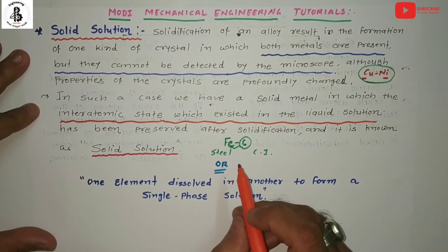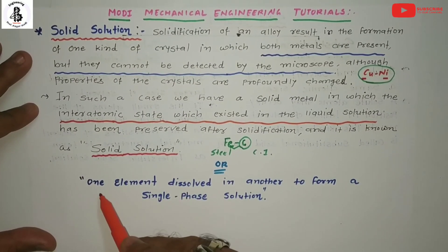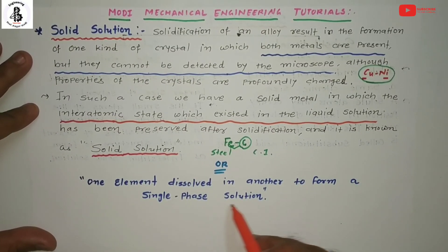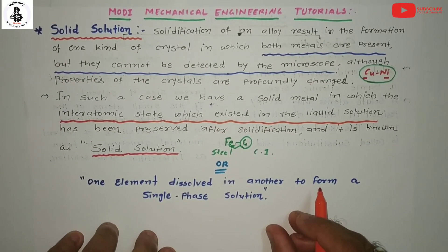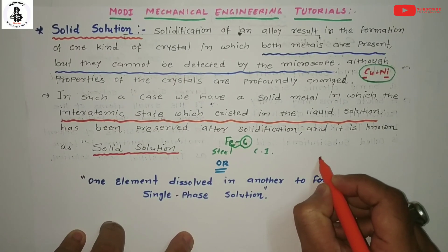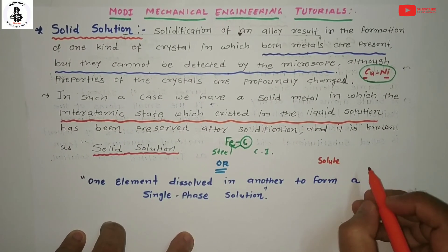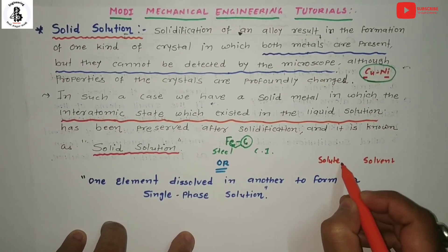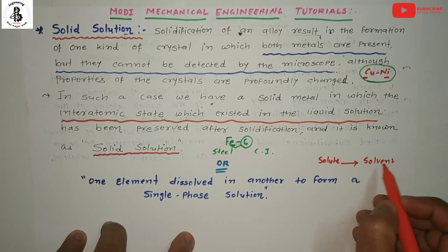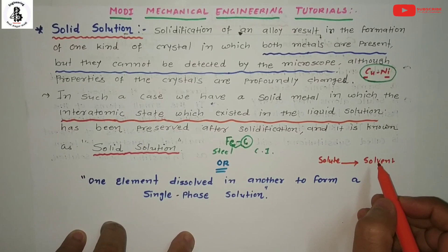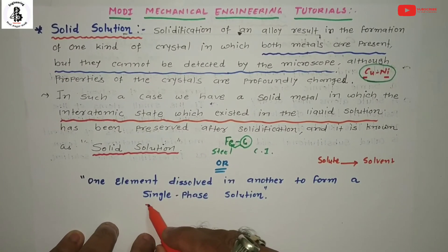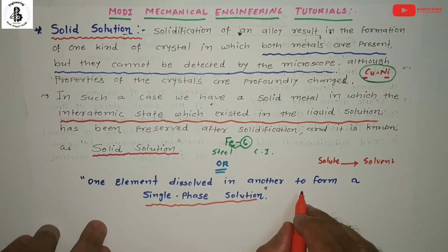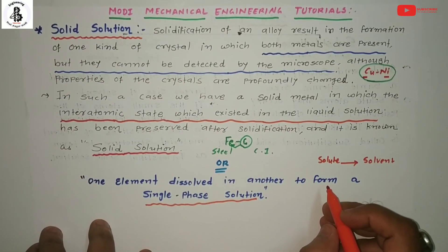In simple terms, the definition of a solid solution is that one element dissolves in another to form a single-phase solid solution. The dissolved element is called the solute and the major proportion is called the solvent. Solute atoms mix into the solvent structure to form a new single-phase material, and this is called a solid solution.